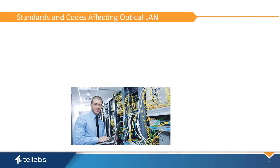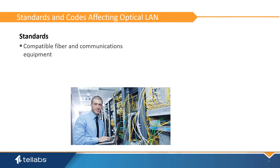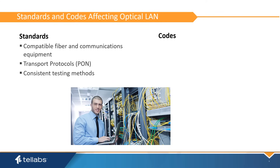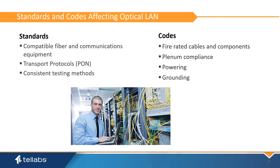To engineer successful optical LAN deployment, the standards and codes relating to PON must be considered. Standards are rules set up by mutual industry agreement. These rules affect the compatibility of fiber cables and communications equipment, as well as the protocols and testing methods used in the network. Codes are rules established by local authorities where the optical LAN system is to be installed. These include fire ratings for cables and components, plenum compliance, and electrical codes that dictate power and grounding.